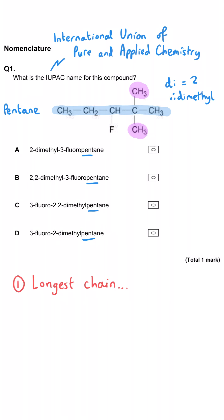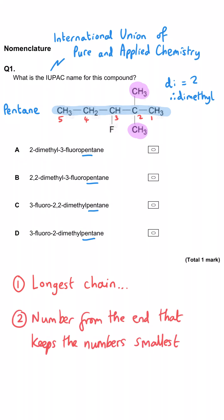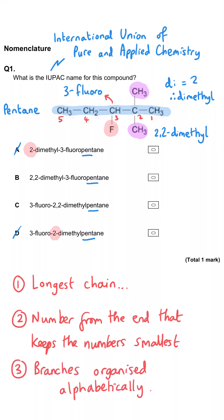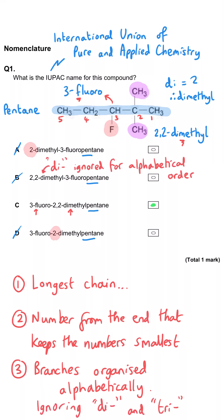What position are these methyl groups in? They're both on the second carbon from the right, and since we need to keep the numbers as small as possible we will be numbering from the right, so this is going to be 2,2-dimethylpentane. That means A and D are wrong because you need a number for every single branch — they only have one number two for the dimethyl. Then we need to look at our final branch, which is a fluorine atom sticking out of carbon number three, so this is going to be B or C. We just need to sort out our alphabetical order: we have a fluoro group and a methyl group, and F comes before M in the alphabet, so C has to be correct because it's got the 3-fluoro before the methyl. Prefixes such as di or tri don't get included in decisions about alphabetical order, so F before M.